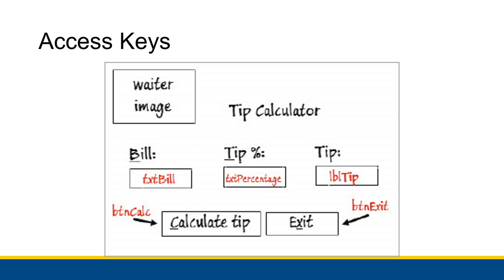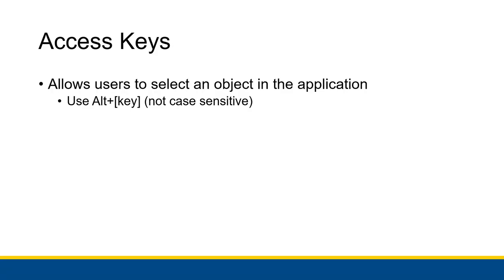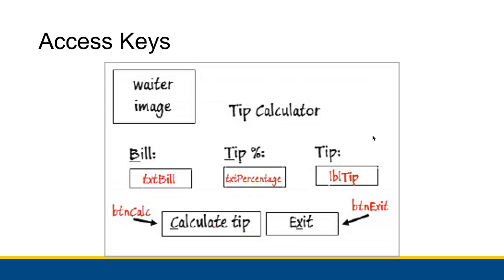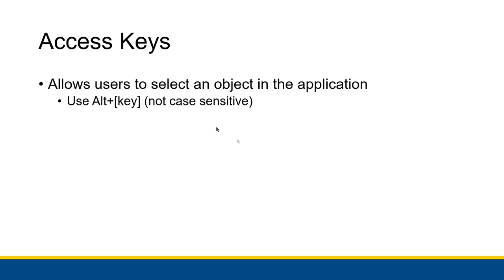There's also an important reason why there are only underlined letters on some of these controls — not all of them — specifically the controls that have user interaction. The underlined letters signify that those letters are access keys in an application. An access key is something that allows users to select an object in the application using only their keyboard. Within this application, we have some underlined letters, and you would actually use a keyboard shortcut where you press and hold the ALT key on your keyboard and then press some letter.